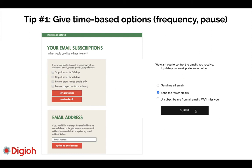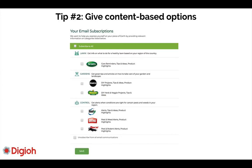Another option is to make it even more generic. You can have a simple toggle with three choices: send me all emails, send me fewer emails, or unsubscribe from everything. What's great is that by default it selects 'send me fewer emails,' so subscribers are already thinking about reducing frequency. They want to stay connected to your brand — they just want fewer emails.